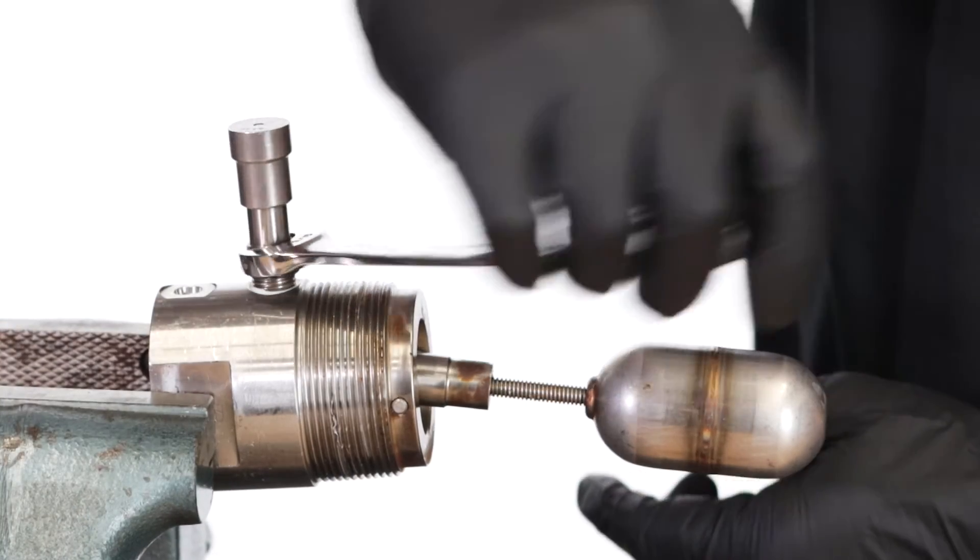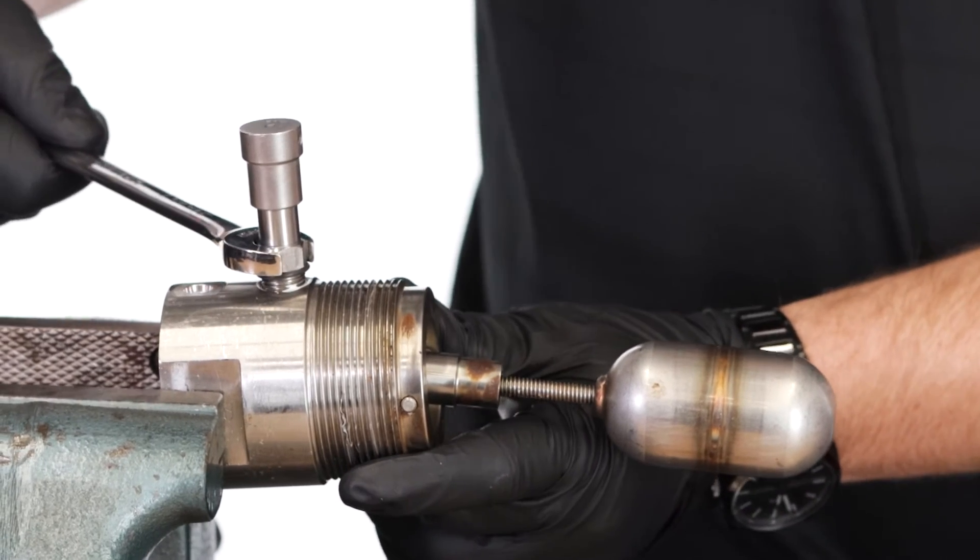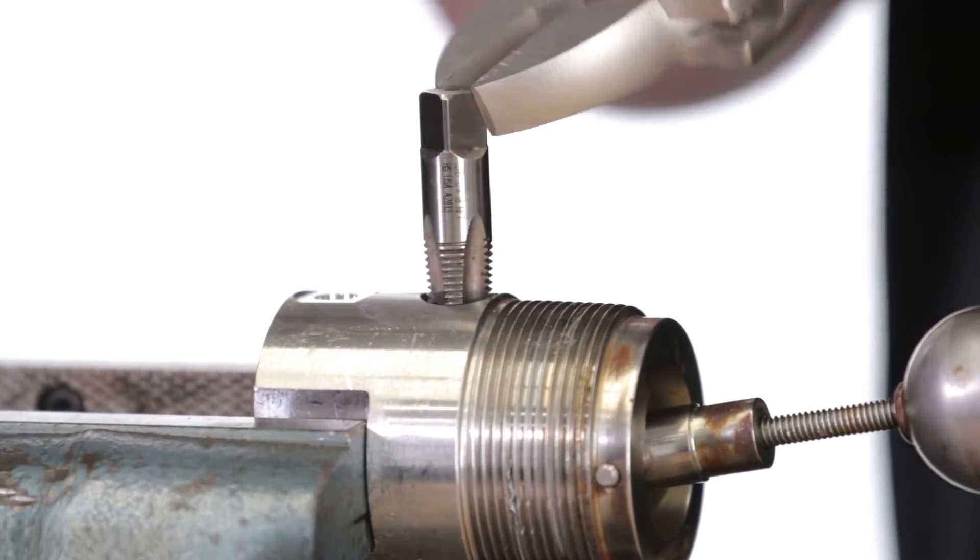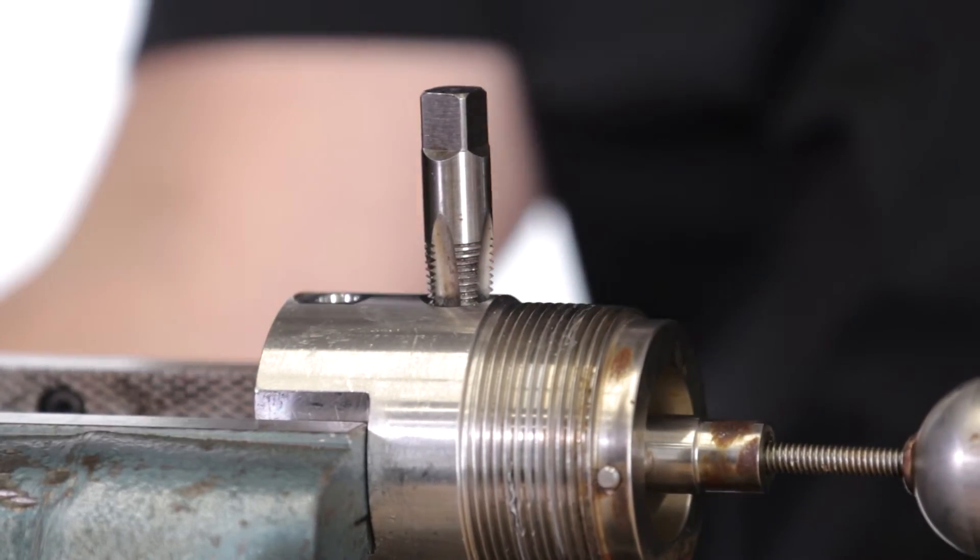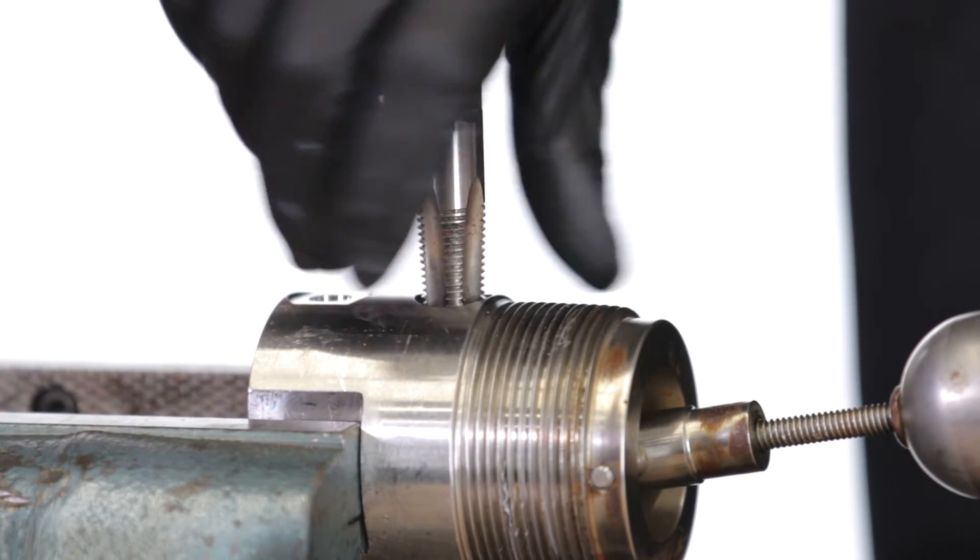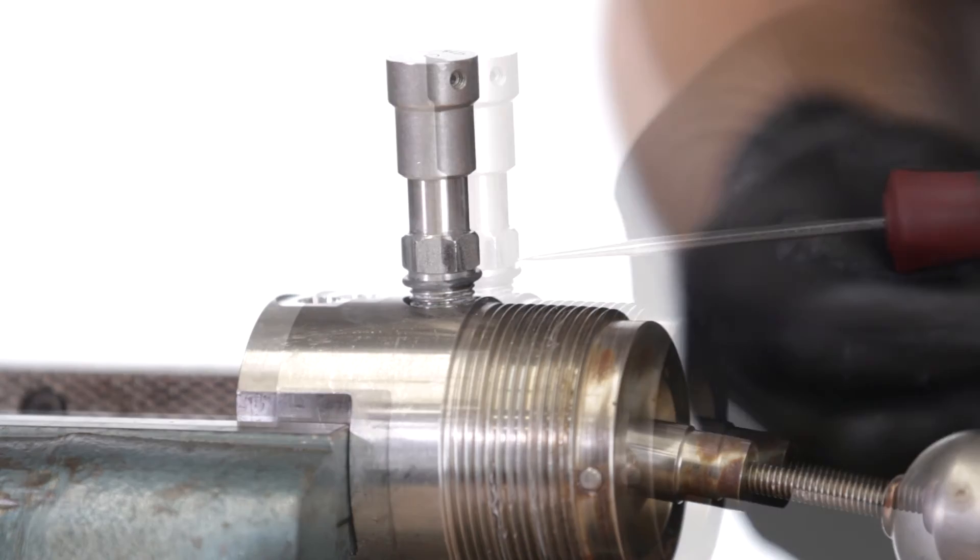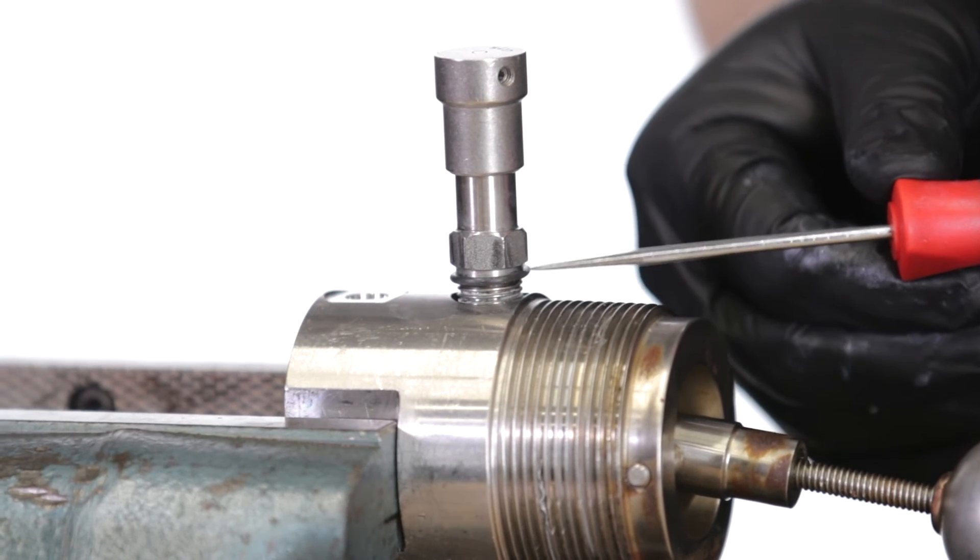On this old level switch, we found the internal threads were messed up and were unable to thread the fitting back into the body. After trying a quarter inch tap with no success, at this point we would need a new level switch because a replacement body would not be cost effective. For the purpose of this video, we'll leave it partially unthreaded and continue showing the repair process.